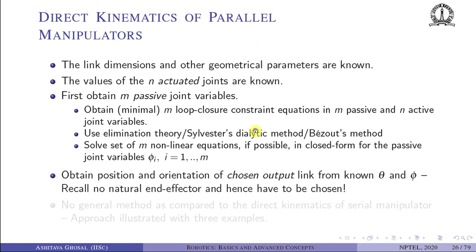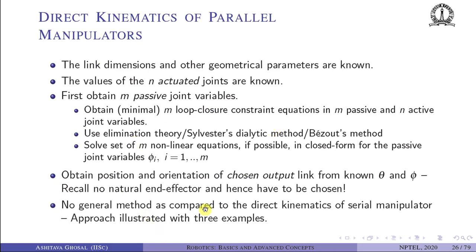Once we find that single element, we solve the equation and by back substitution find all m passive joint variables. Once the actuated and passive joint variables are known, we obtain the position and orientation of a chosen output link. In a parallel robot there is no natural end effector, unlike a serial robot. Hence we must specify the output link. There are no known general methods for direct kinematics of parallel robots, because choosing the minimal loop closure constraint equations and finding the minimal polynomial in one passive variable is not always obvious.